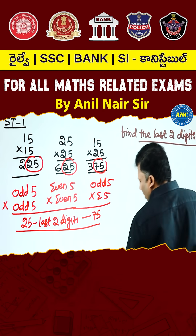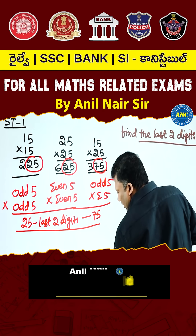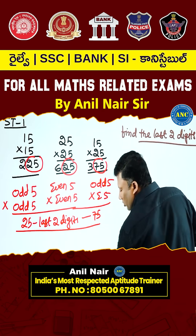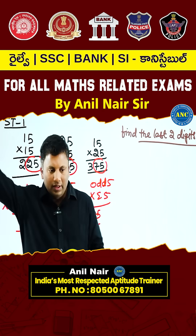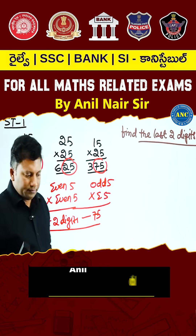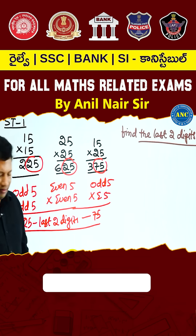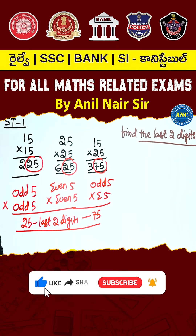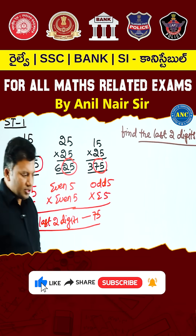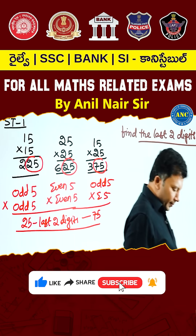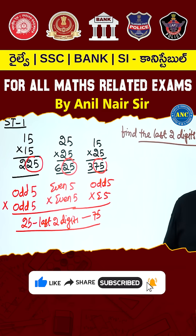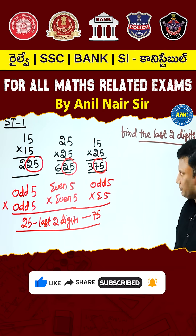I will do two problems. Another two, you have to do it orally. Look at here. Find the last two digits — see this question? I will go a little slowly so that you can note it.